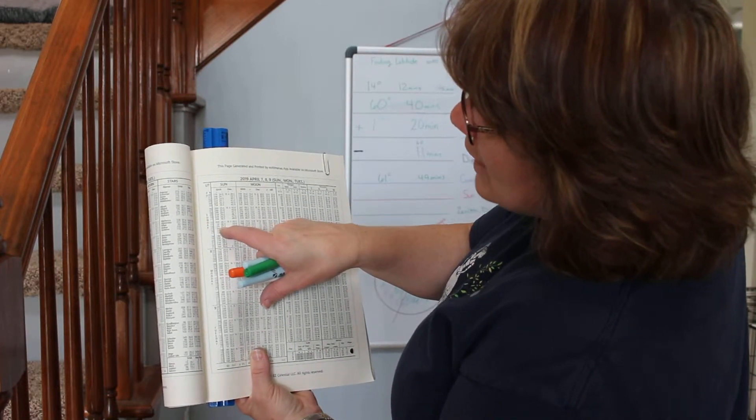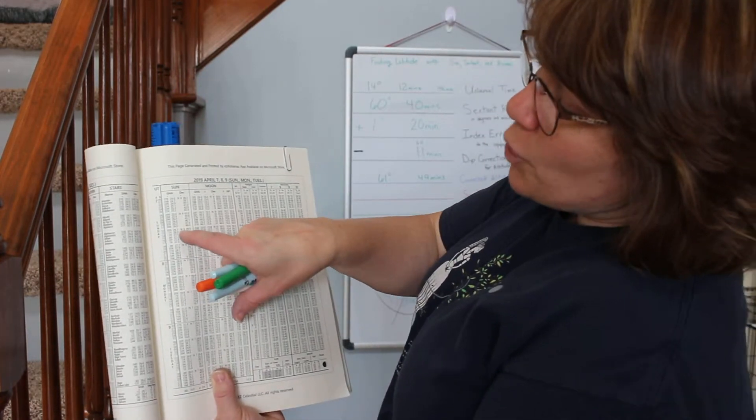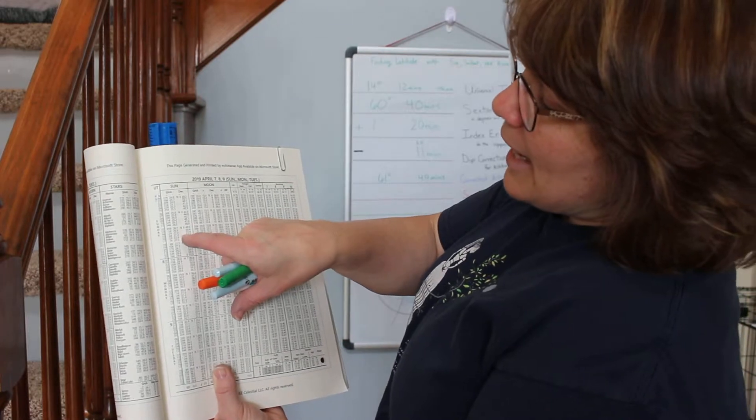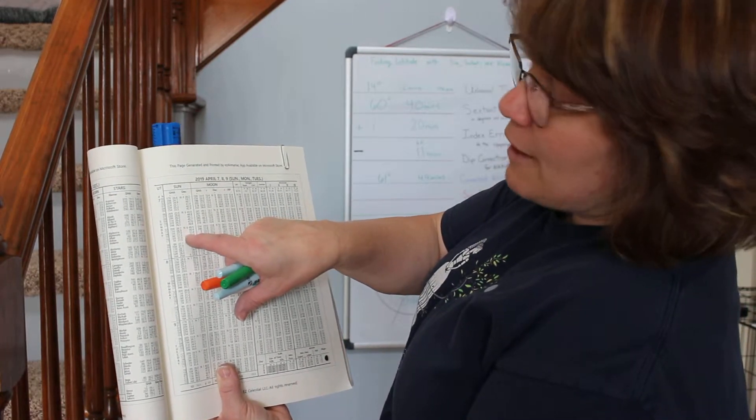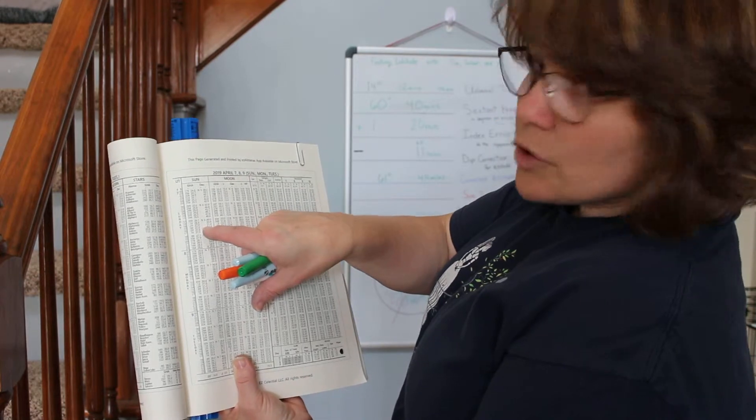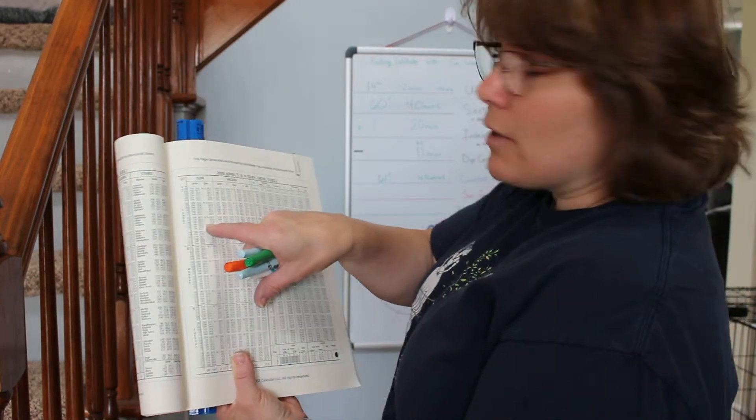I follow it across and the sun is at a declination north 6 degrees and 51 minutes. So I'm going to put north 6 degrees 51 minutes into my calculation.